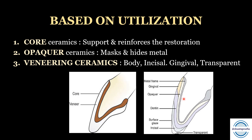Third are the veneering ceramics. These include body ceramic, which simulates the dentine part of natural teeth; incisal ceramic, which simulates the enamel of natural teeth; gingival ceramic, which are darker ceramics simulating the darker gingival portion; and transparent ceramics, placed just below the incisal ceramics, which simulate the translucent incisal enamel present in natural teeth.